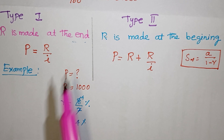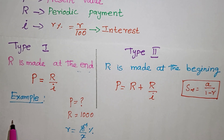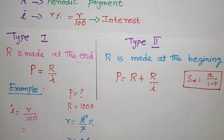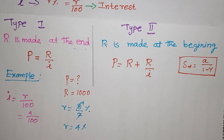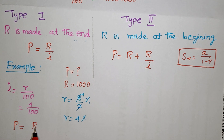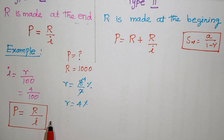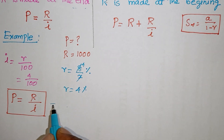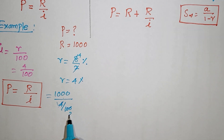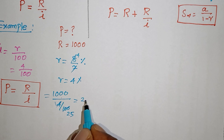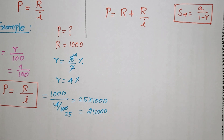Now we apply the formula. Present value P equals R divided by i. This is the basic formula since payment is done at the end of every period. Substituting: R equals 1,000 and i equals 4 by 100. We get P equals 1,000 divided by (4/100), which equals 1,000 multiplied by 25, giving present value equals 25,000.